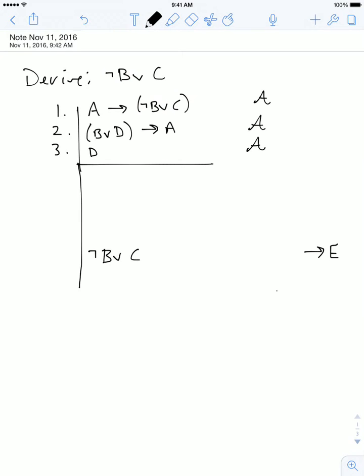Okay, so now we just are going to ask ourselves the following question: what sentence do we need to complete the elimination for the material conditional? And the answer is we're going to need to have the sentence A. And the reason for that is because if we had A and we had our primary assumption here, with those two sentences we're going to eliminate the material conditional and get our original target sentence not B or C.